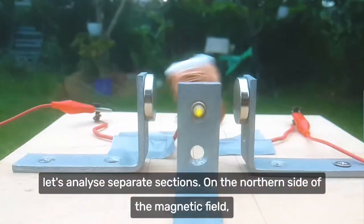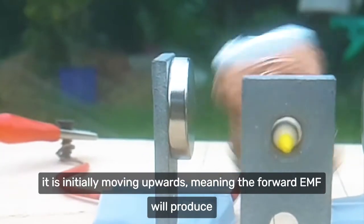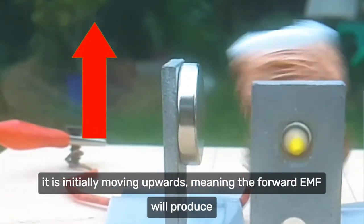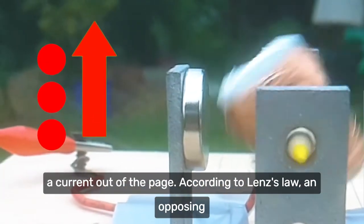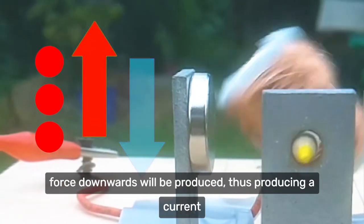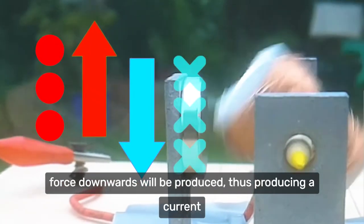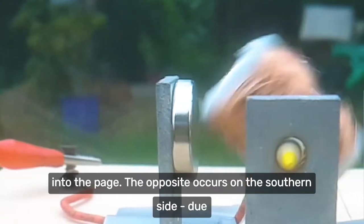To analyse back EMF in this motor, let's analyse separate sections. On the northern side of the magnetic field, it is initially moving upwards, meaning the forward EMF will produce a current out of the page. According to Lenz's law, an opposing force downwards will be produced, thus producing a current into the page. The opposite occurs on the southern side.